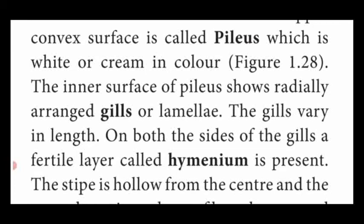We are going to see the cross-section or vertical section of an Agaricus gill. We can see a fertile layer called hymenium present on both the upper and lower sides of the gills. The gills are radially arranged chambers on the inner side of the pileus, known as gills or lamellae. These are all visible structures we can see with the naked eye. In the vertical section of the Agaricus gill, the fertile layer known as hymenium is present on the upper surface as well as the lower surface.